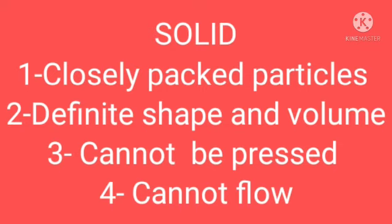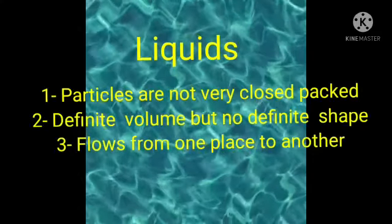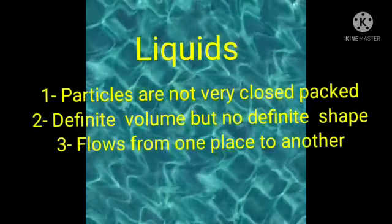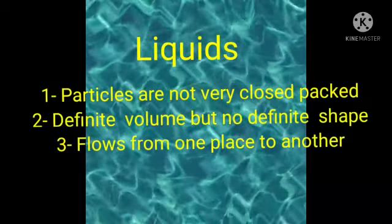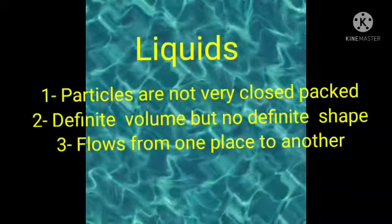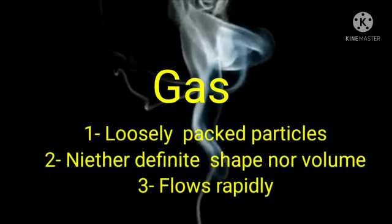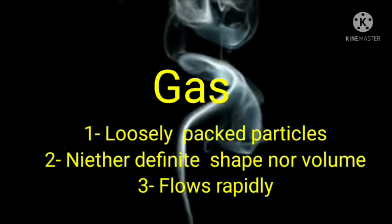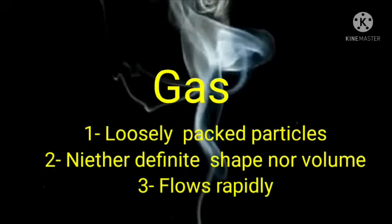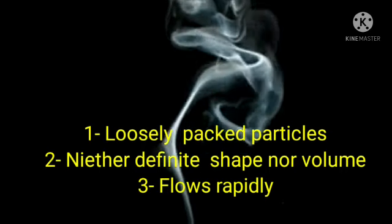Let's discuss the states. In solid, molecules or particles are closely packed. That's why they have definite shape and volume. They cannot be pressed and they do not flow. But in liquids, the particles or molecules are not closely packed. So, they don't have a definite shape but they have definite volume. And they have tendency to flow from one place to another because of the arrangement of molecules. They have intramolecular space. And that's why, in gas also, the molecules are loosely packed. They don't have neither definite shape nor volume. But they have tendency to flow very rapidly. Because they have space among them, the force also works very low. And they can easily flow from one place to another place.